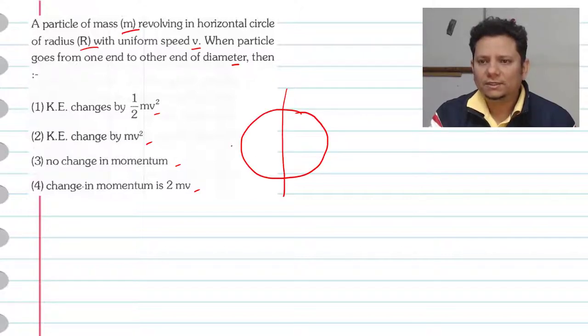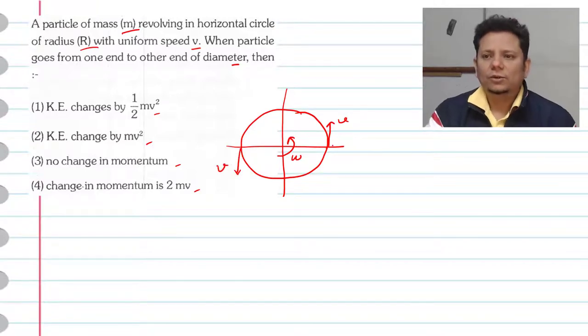Let us say particle is moving in anti-clockwise direction. Omega is fixed, uniform speed v. Here is velocity v, here is velocity v, here is velocity v.